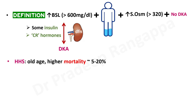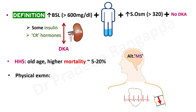Mortality is much higher in HHS than in DKA, put at anywhere between 5 to 20%. The striking clinical feature on physical examination is altered mental status or obtundation. There can also be significant hemodynamic instability — hypotension and severe tachycardia may be present. Features typical of DKA like vomiting and abdominal pain are typically absent in HHS.